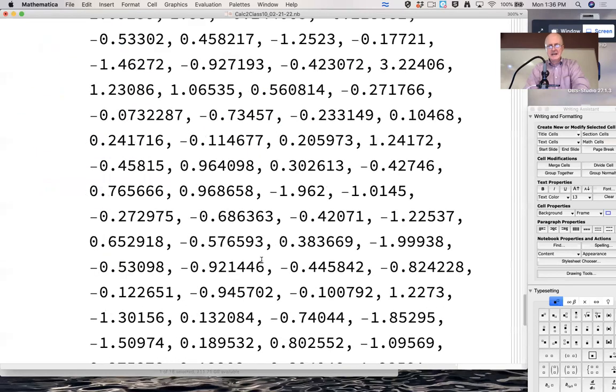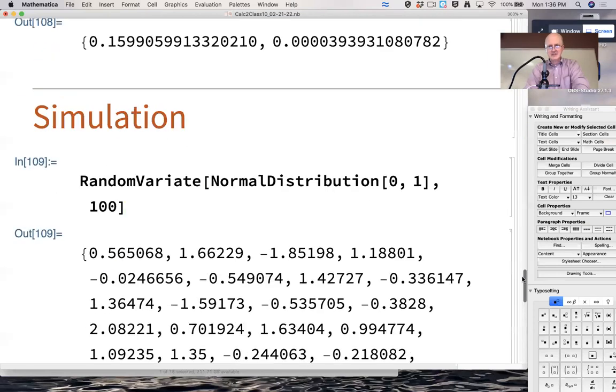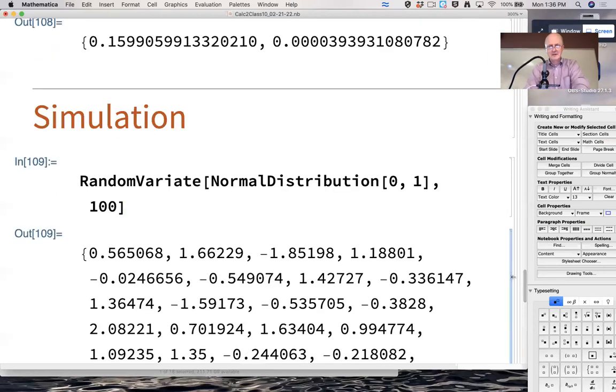There's 100 simulated data values from this bell-shaped distribution that, again, is centered at zero with something called a standard deviation of one. What does this mean, and why is it relevant?